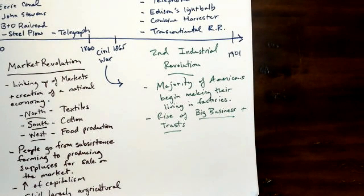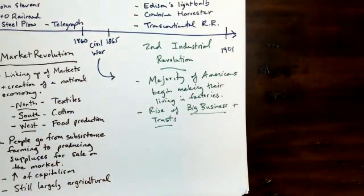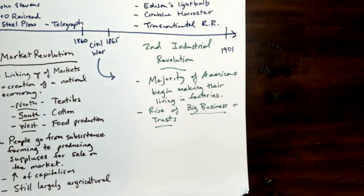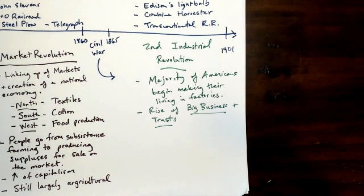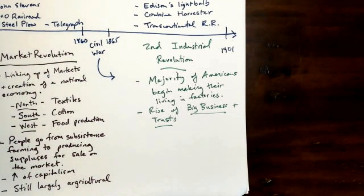Speaking of big business, we see the rise of big businesses and trusts in a way we had never seen in previous eras. This is an era dominated by big business and trusts. We see companies becoming, in some cases, more powerful than the government. We see the creation of Carnegie's U.S. Steel, Rockefeller and his Standard Oil Trust, Vanderbilt pioneering the railroads, and J.P. Morgan, a very influential banker who is also one of the main investors in Edison's electric light company, which eventually becomes the incredibly important company known as General Electric — responsible for wiring up and electrifying large parts of America by the end of this era.